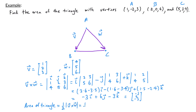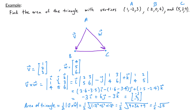The area of the triangle is one half times the length of v cross w. That's one half times the length of (-3, 6, -3), which equals one half times the square root of (9 + 36 + 9), which is one half times the square root of 54.